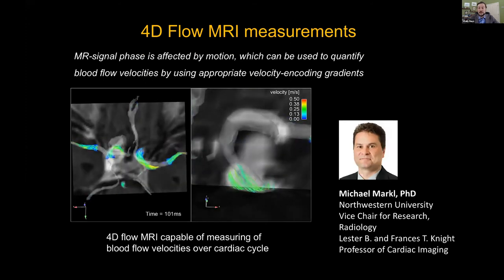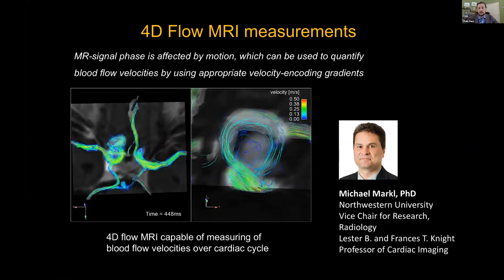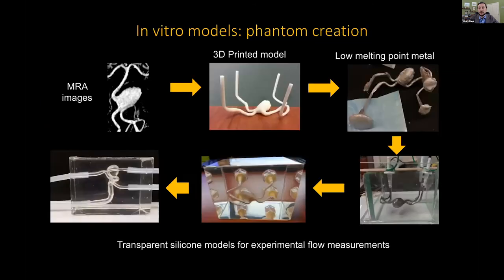When I moved to the Midwest, I started working with Michael Markle, a professor of radiology at Northwestern University and pioneer in developing MRI methods for measuring blood flow in vivo. He coined the term '4D flow MRI' — time-resolved, three-directional velocity measurements. By cleverly manipulating magnetic field gradients, you can get velocity vectors over the cardiac cycle. Comparing these MRI blood flow images with our computational models, we understood that each technique has advantages and limitations — modeling assumptions in computation, and limited resolution and noise in MRI. The question became: can we fuse this data? That's how I expanded into experimental studies.